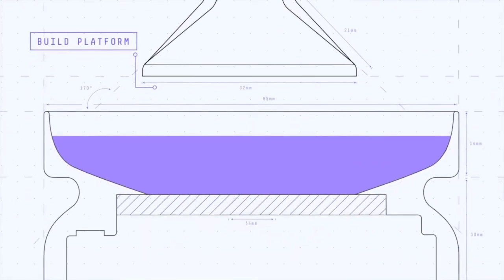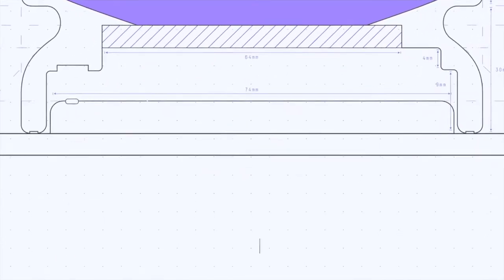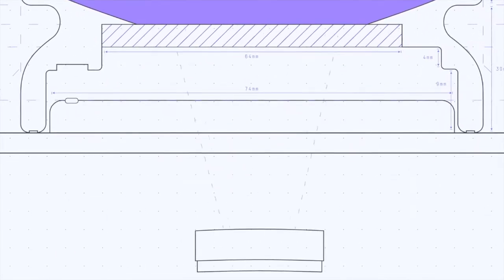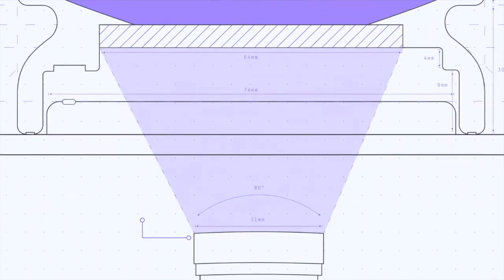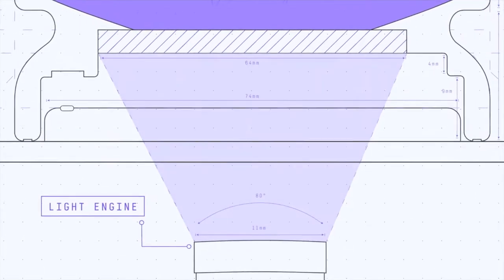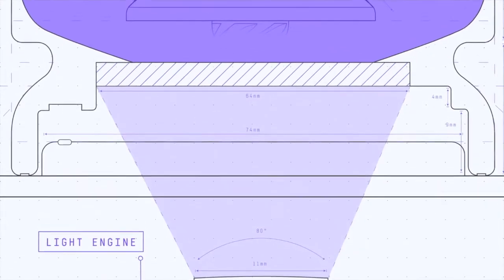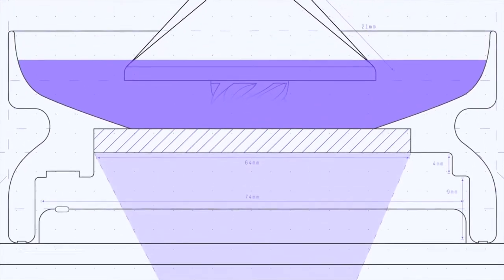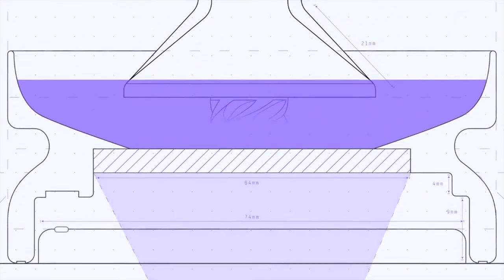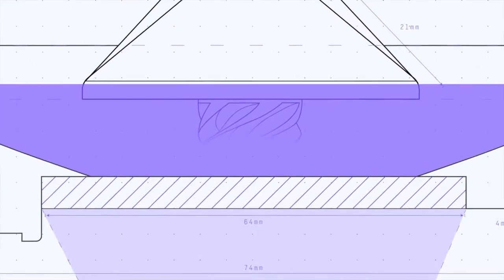Here's how DLS and continuous liquid interface production work. Light from an LED light engine projects a sequence of UV images exposing a cross section of the part, causing the UV curable resin to partially cure in a precisely controlled way.